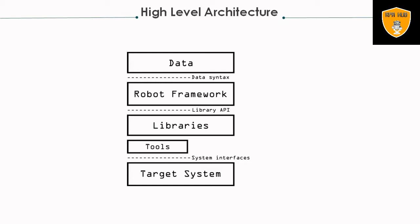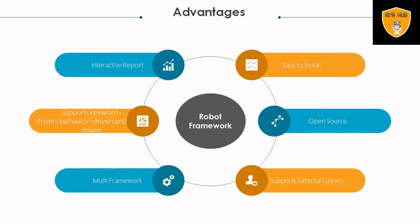The core framework does not know anything about the target under test. Interaction with it is handled by libraries. Libraries can either use application interfaces directly or use lower-level test tools as drivers. Finally, there is the target system on which we are performing the complete automation.